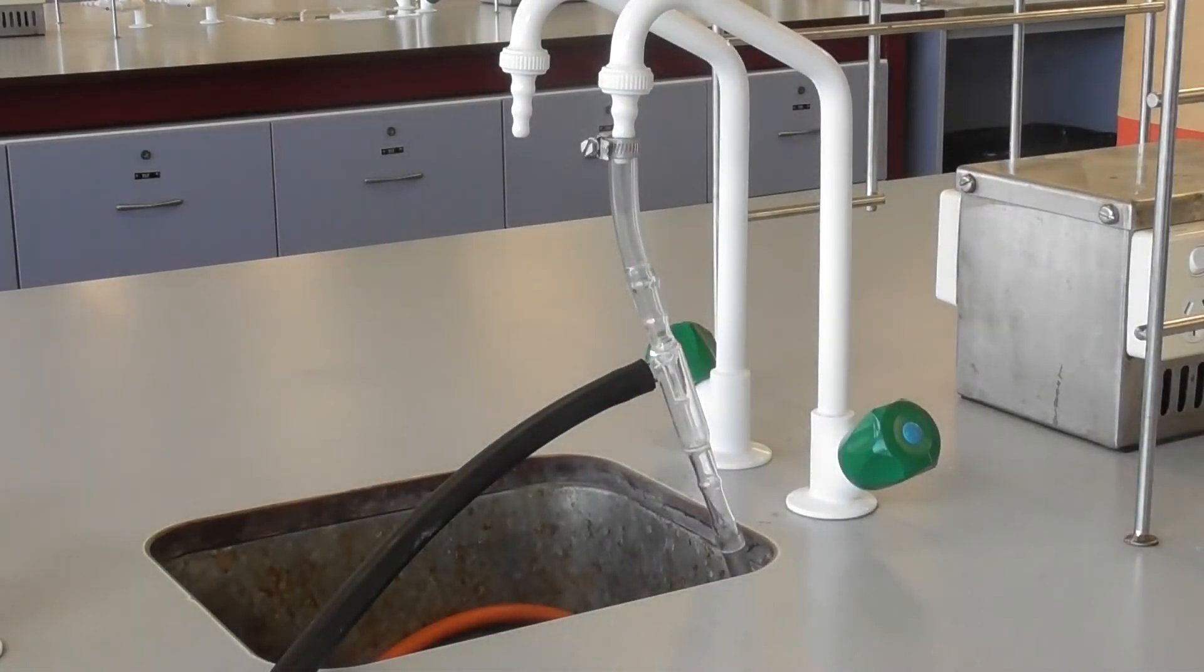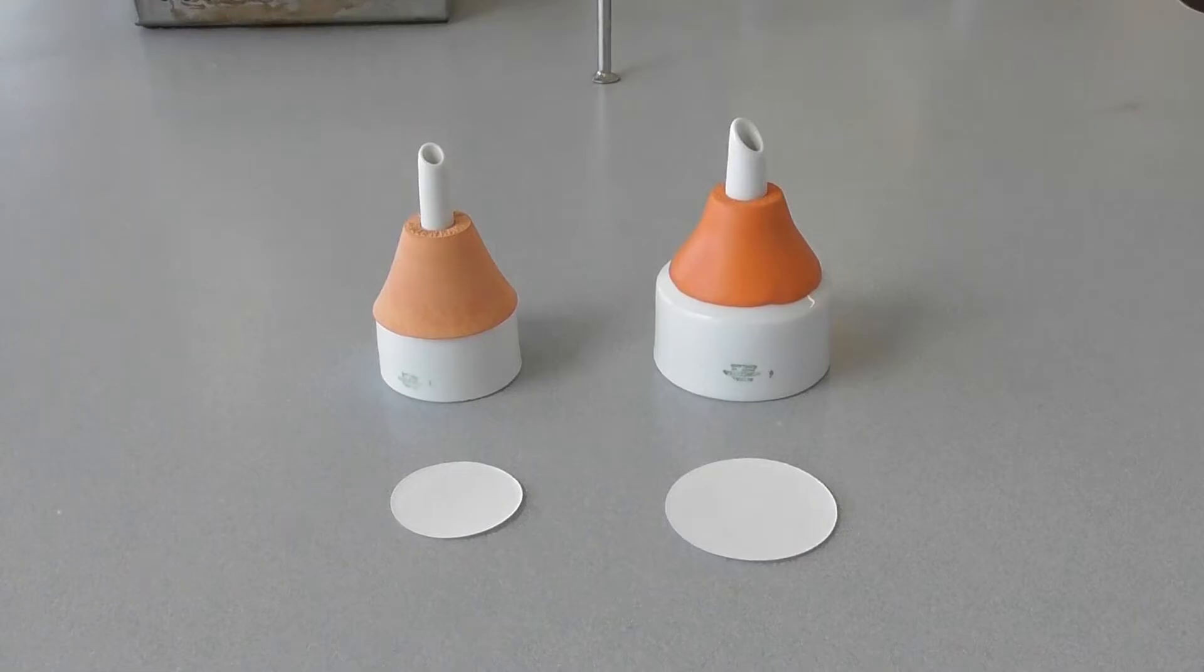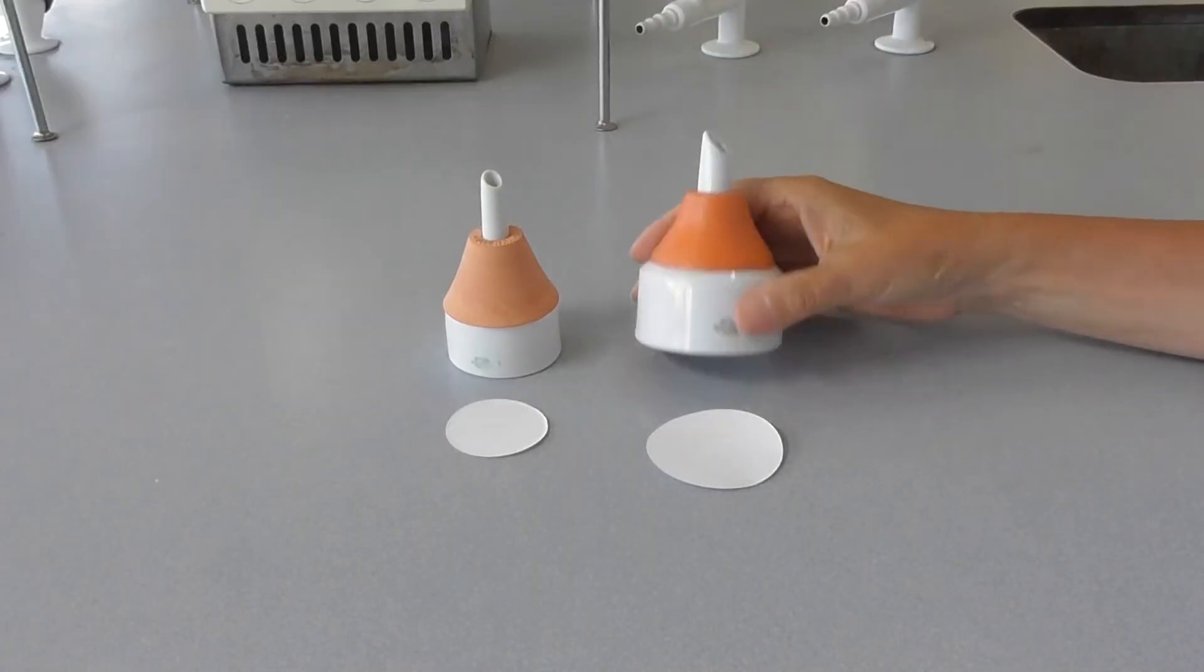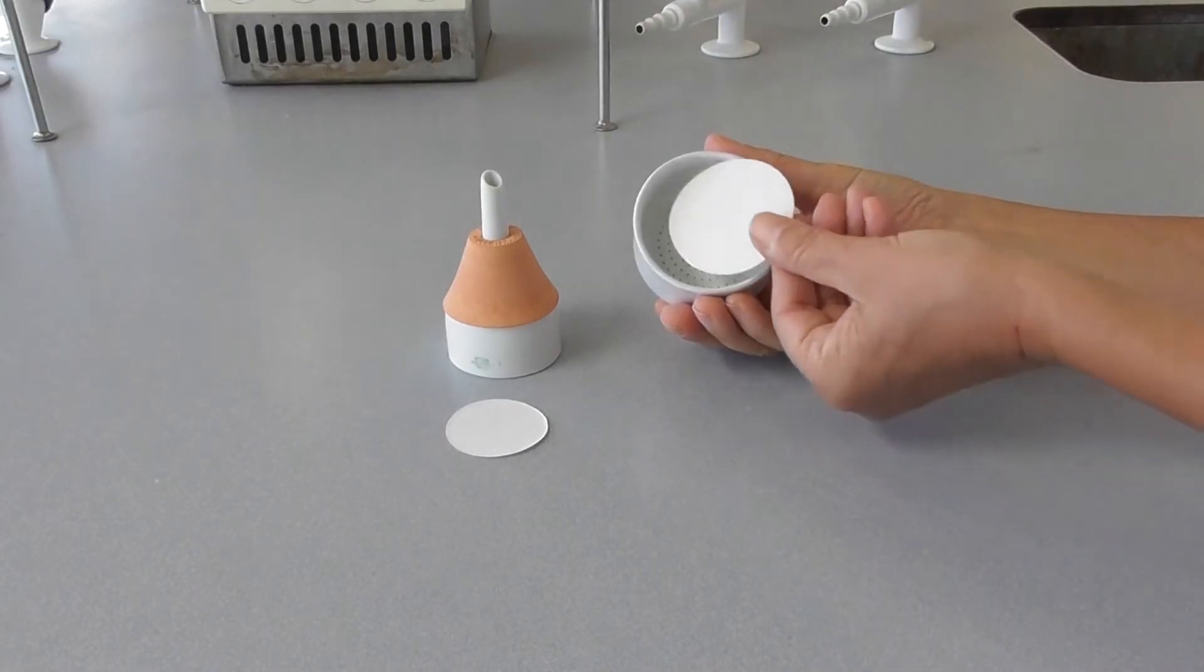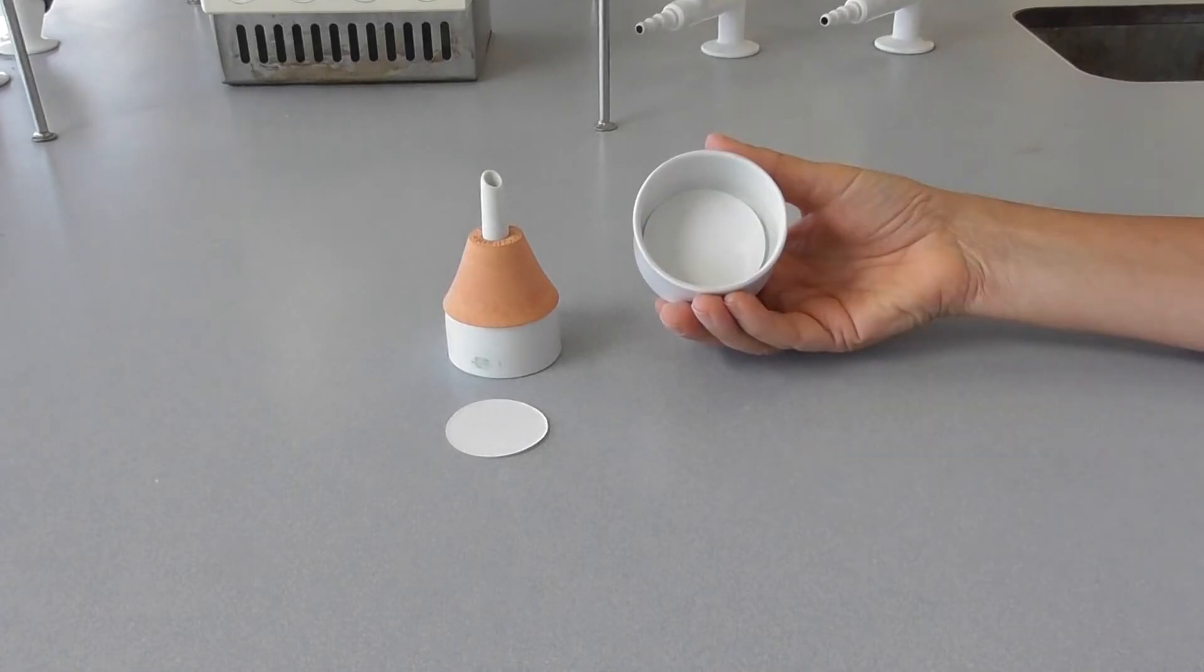To carry out the vacuum filtration you will also need a Büchner funnel and filter paper. As the Büchner funnels come in different sizes you must check that you are using the right size of filter paper for your funnel. The filter paper should fit snugly on the bottom of the funnel covering all of the holes.